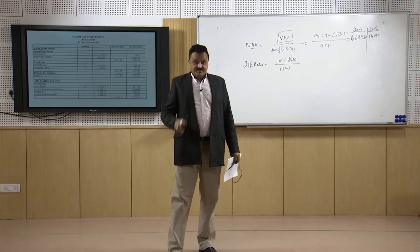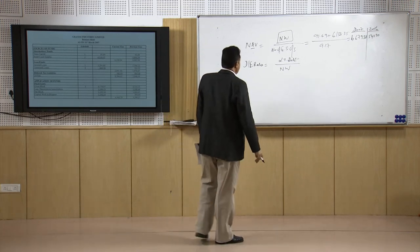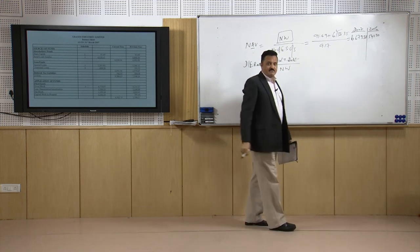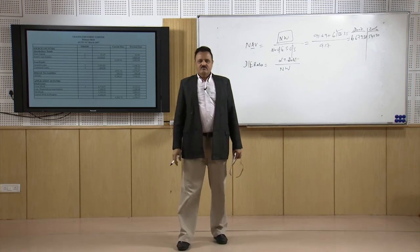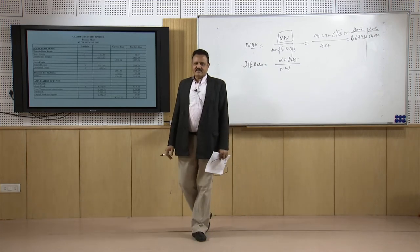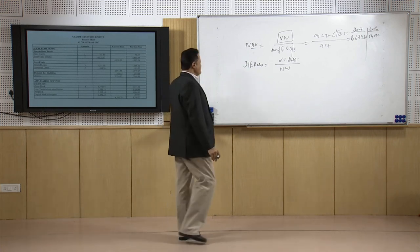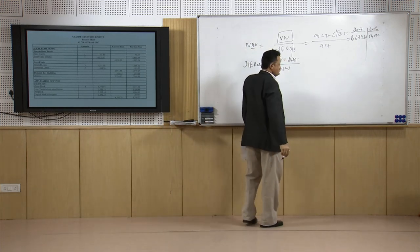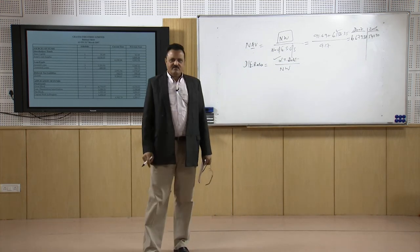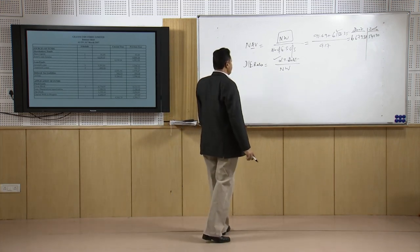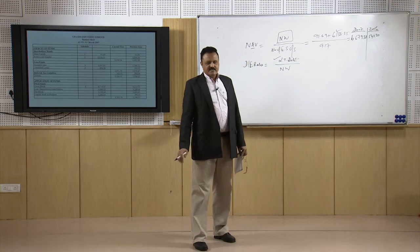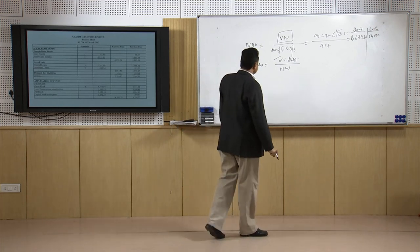In the previous lecture I was talking about why we take the reserves and surplus as the year-end figure and not as the average of the two years. While calculating the debt equity ratio, we take the net worth using year-end figures for reserve and surplus because we also take long-term loans as the year-end figure. When the numerator is the year-end figure, the denominator also has to be the year-end figure. Similarly, we take the year-end figure for reserves and surpluses in the NAV calculation as well.